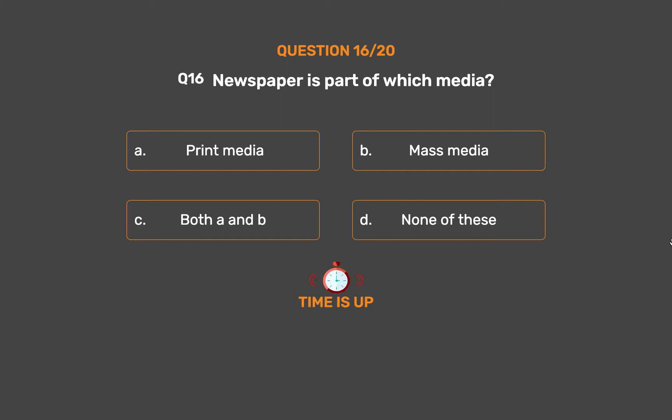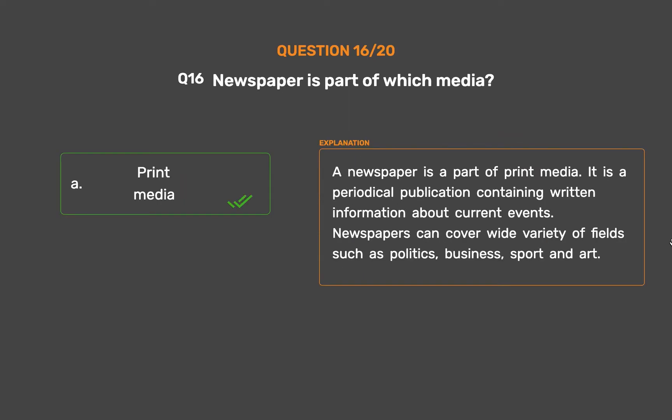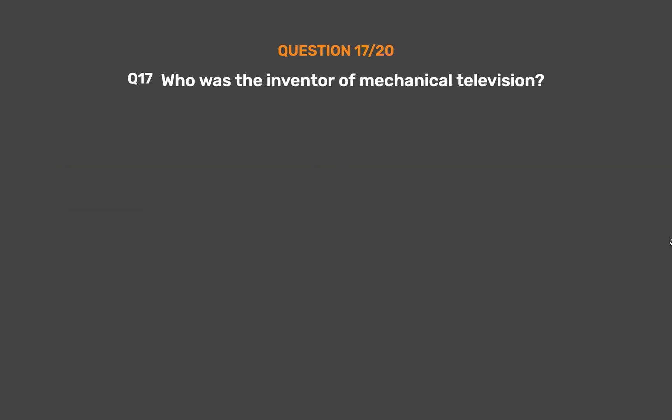The correct answer is Option A: Print media. A newspaper is a part of print media. It is a periodical publication containing written information about current events. Newspapers can cover a wide variety of fields such as politics, business, sport and art.